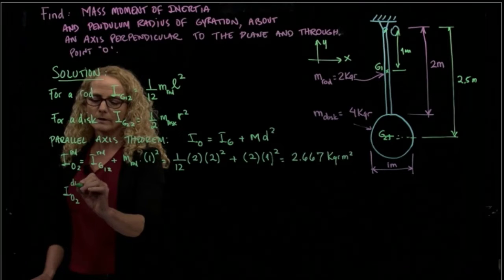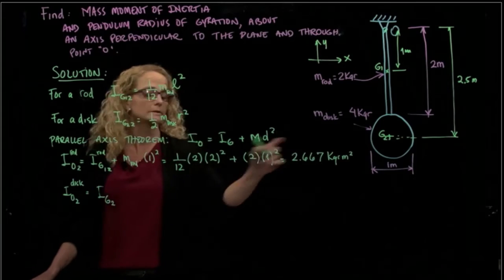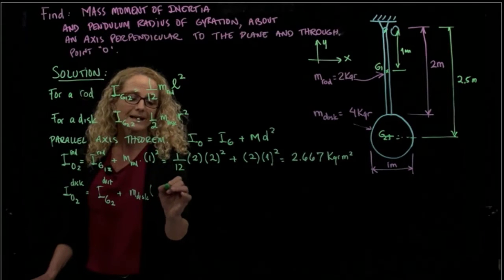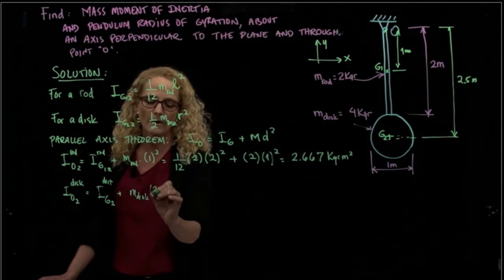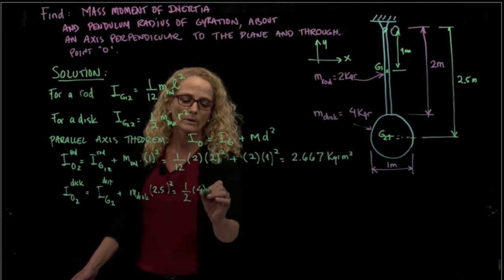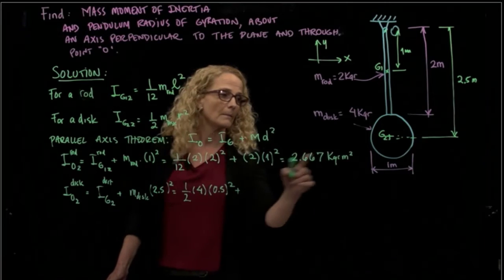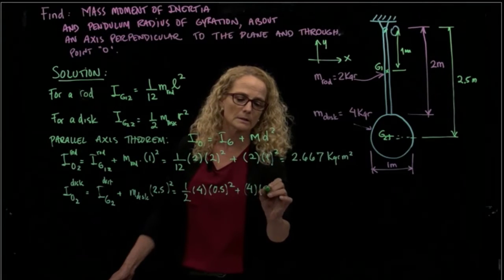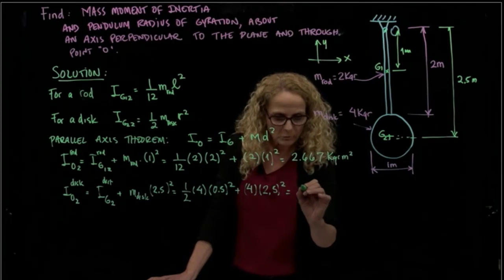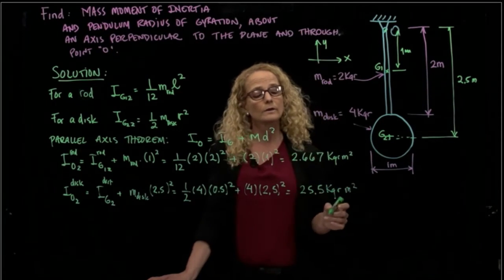And I do exactly the same for the disk. About O of the disk will be the inertia respect to the center of the disk, plus the mass of the disk, plus that distance that we already wrote right here, that is 2.5 squared. So that will be 1/2, the mass, which is 4, the radius that is 0.5 squared, plus the mass of the disk, which is 4, times the distance that is 2.5 squared.